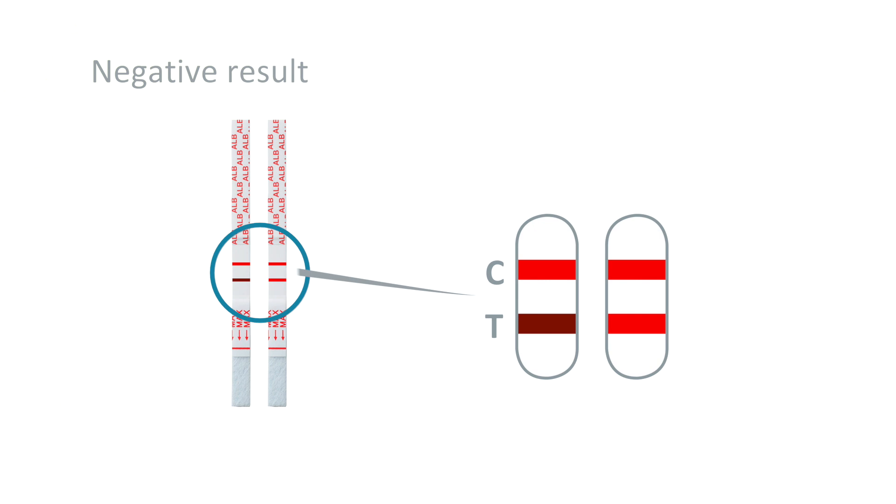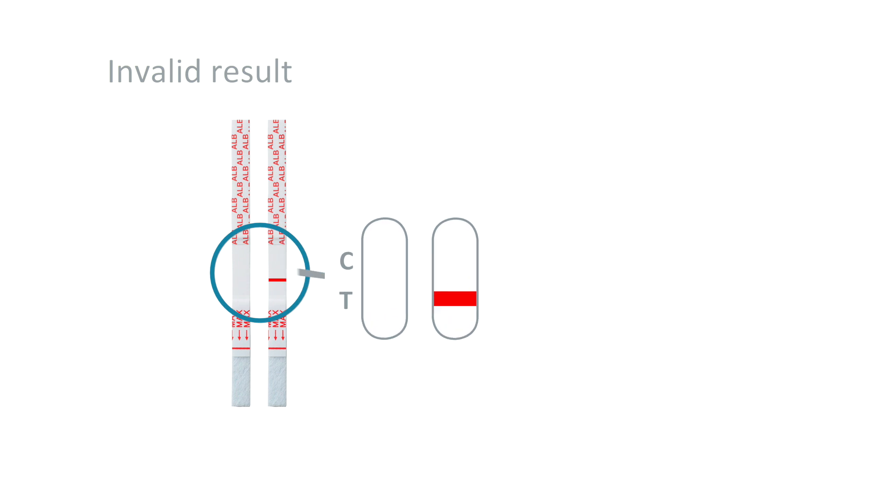Again, a control line signifies that the test has performed correctly and should always be present. If no control line appears, the result is invalid. Repeat the test with a new test device.